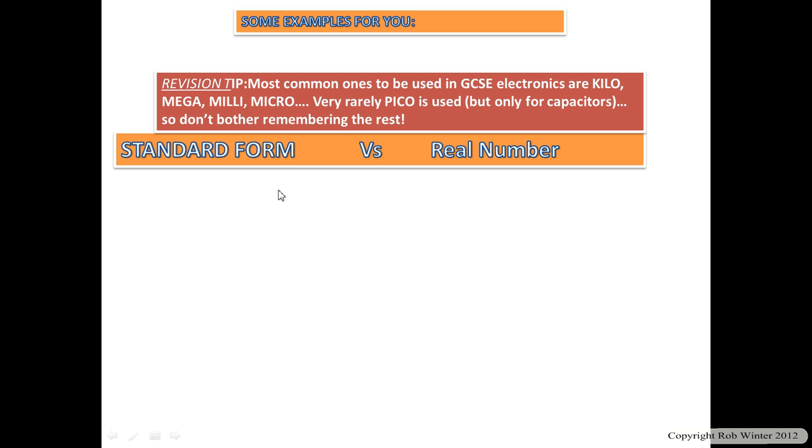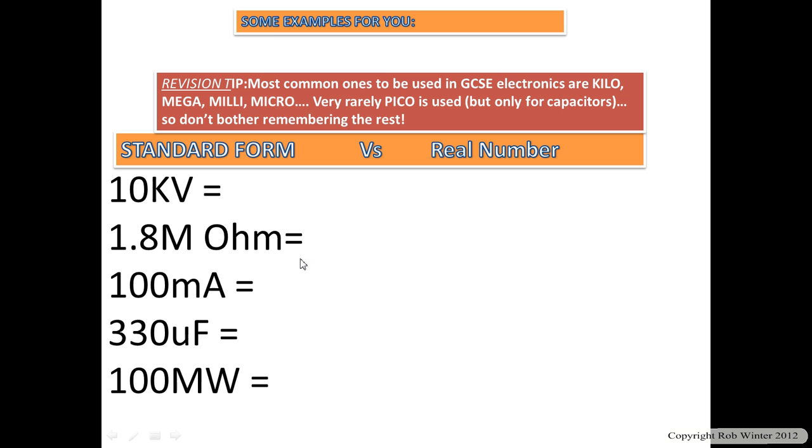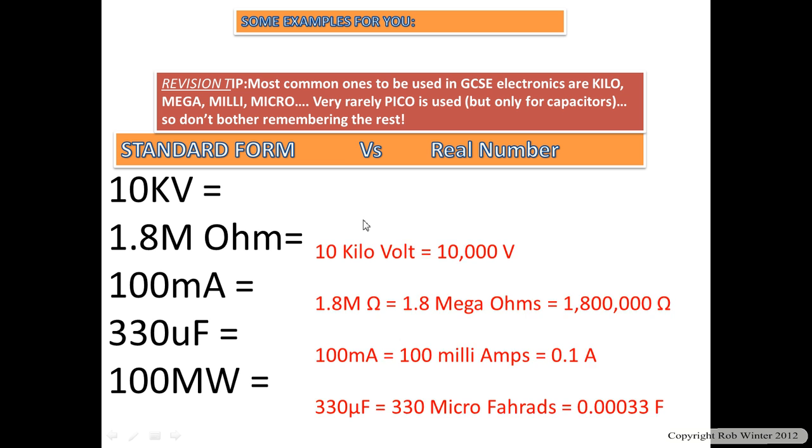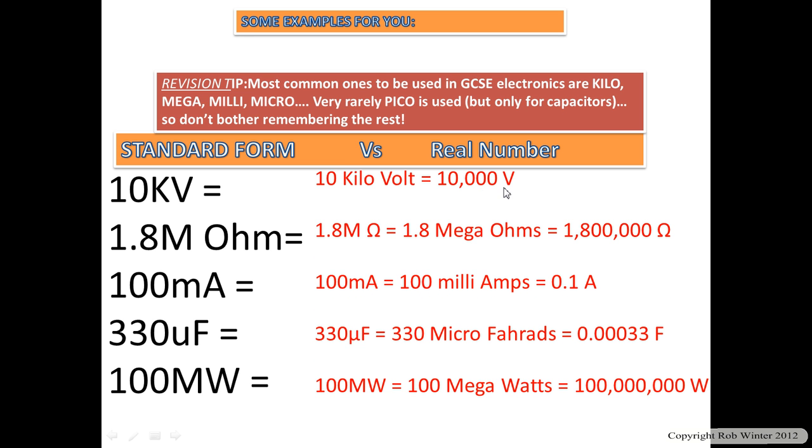Anyway, a few examples. On the left of the standard form numbers, on the right is what they would translate to, and what you would need to kind of put into your calculator, either converted or as you go, which I'll show you in a minute. So 10 kilovolts, 1.8 mega ohms, 100 milliamps, 330 micro farads, remember the funny U shape stands for micro, and 100 megawatts. So 10 kilovolts is actually 10,000 volts, 1.8 mega ohms is 1,800,000 ohms, 100 milliamps is 0.1 of an amp, 330 micro farads is 0.00033 farads, and 100 megawatts is 100 million watts. So you can see they translate into very different things.